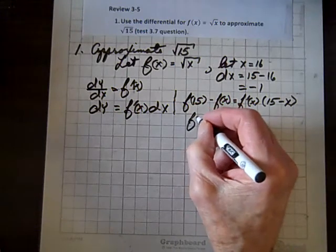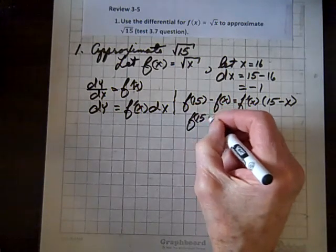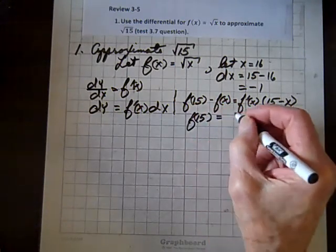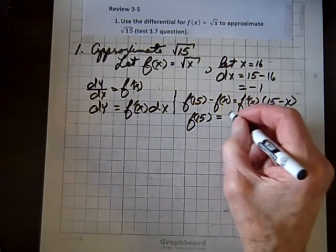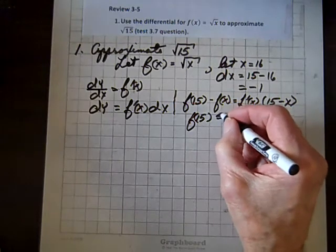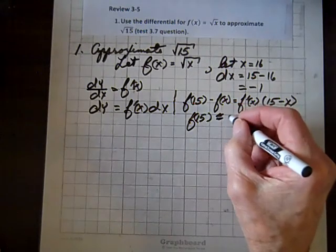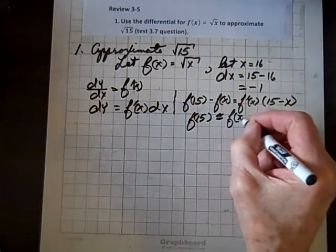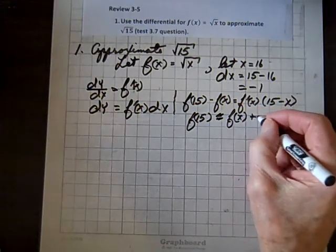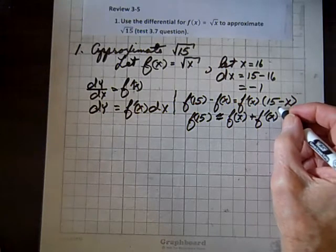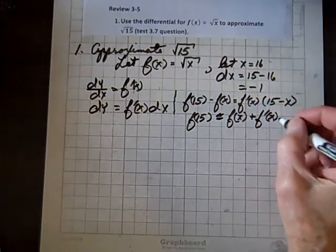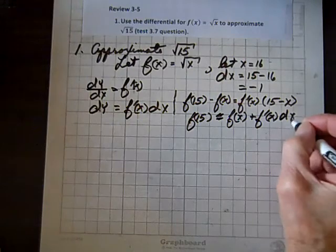So then f of 15 equals, and this is actually going to be an approximation. So I'm going to put approximate, adding f of x to both sides, plus f prime of x. But notice,